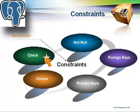El Check Constraint es usado para asegurar reglas simples, como controlar o limitar el contenido que se va a almacenar en una tabla. Estos Check pueden referenciar a otras columnas en la fila que está siendo chequeada, pero no pueden referenciar a otras filas o tablas externas, ni pueden llamar a otras funciones.